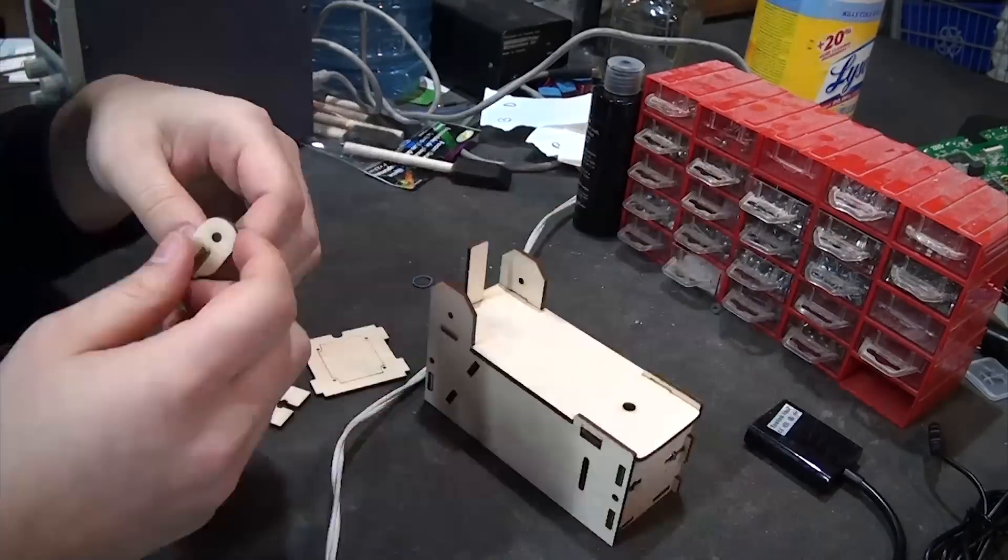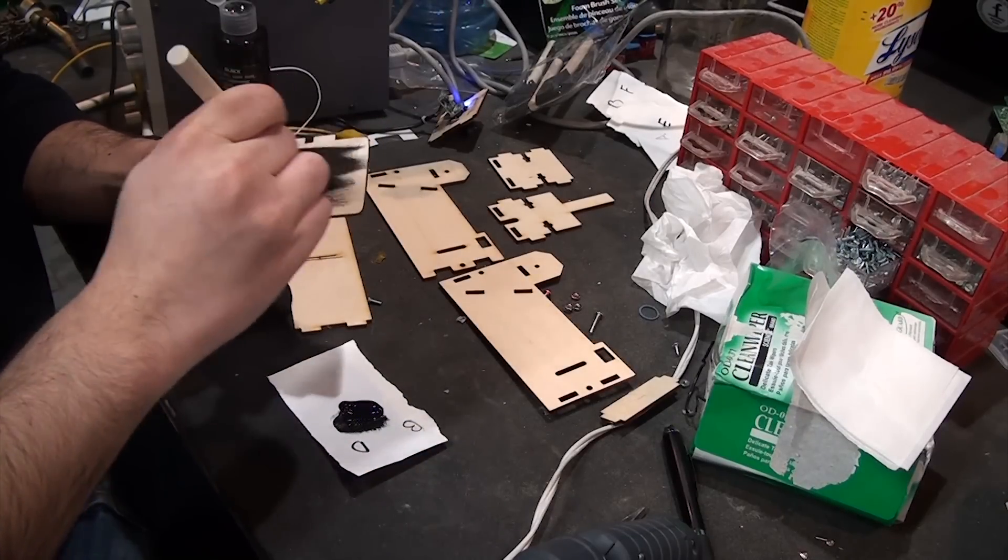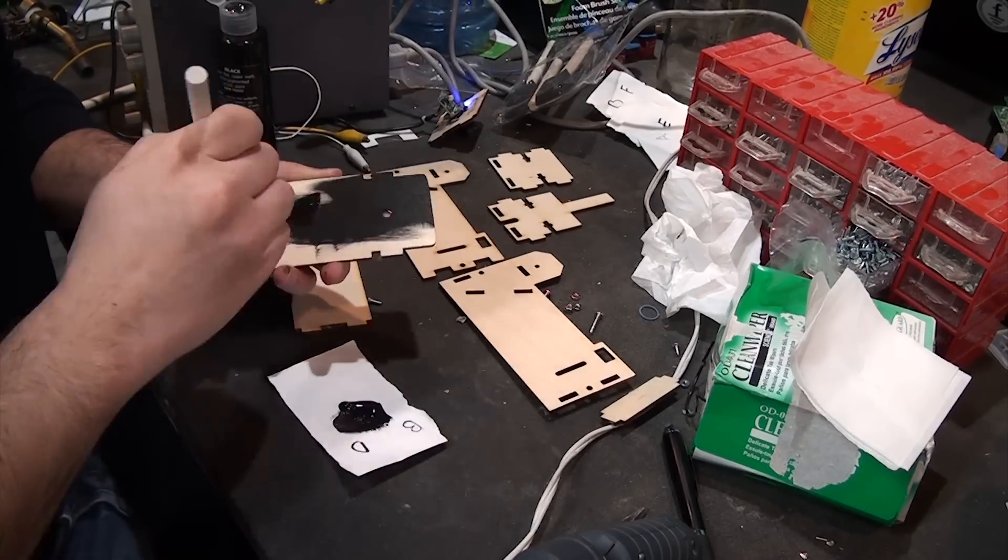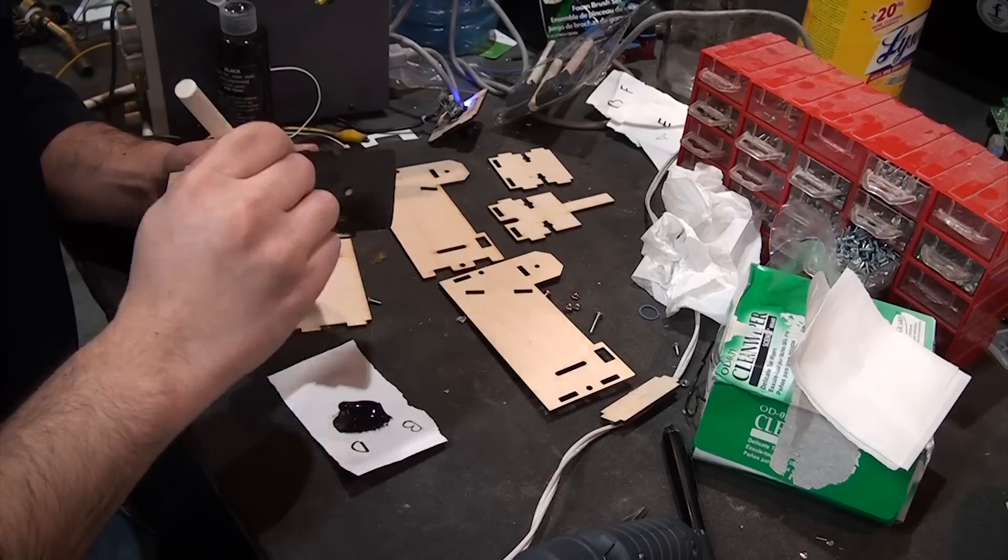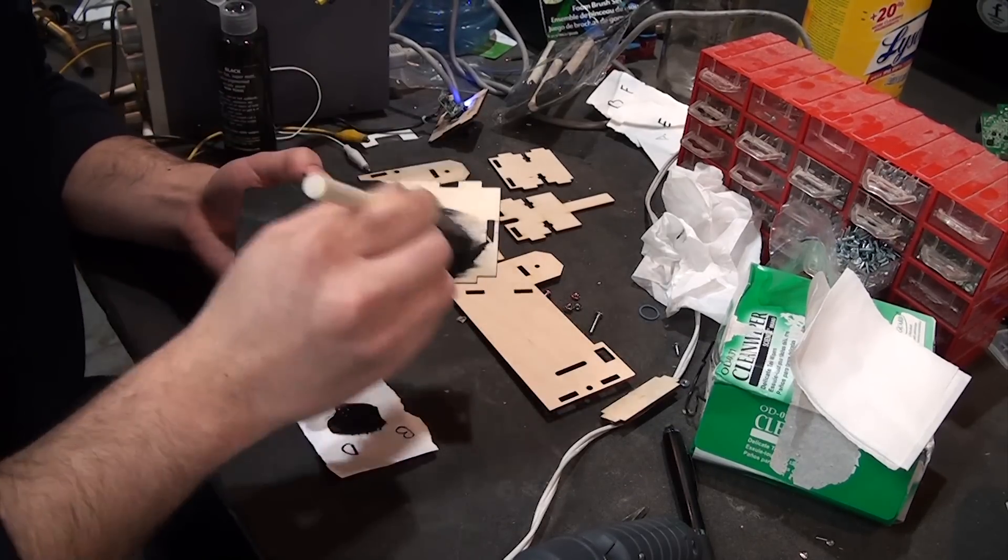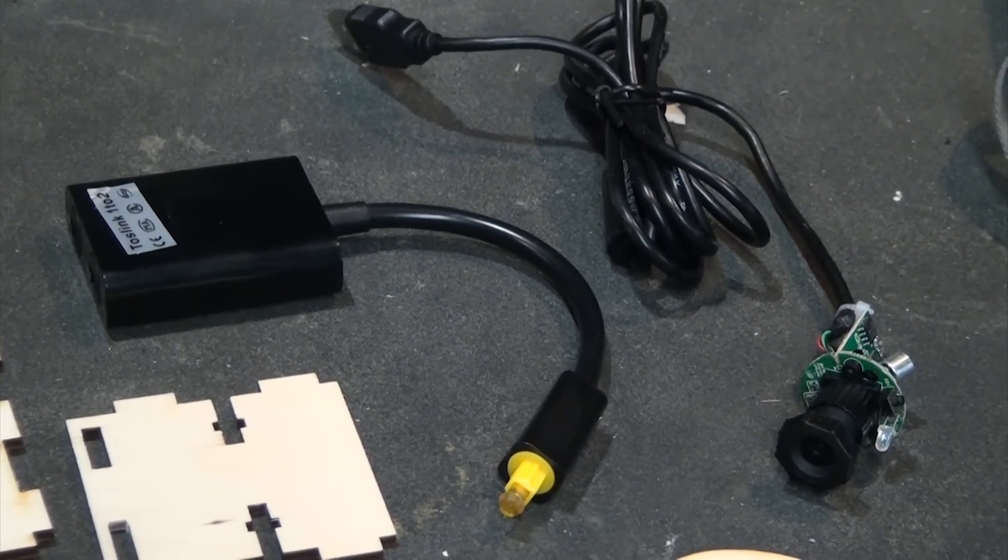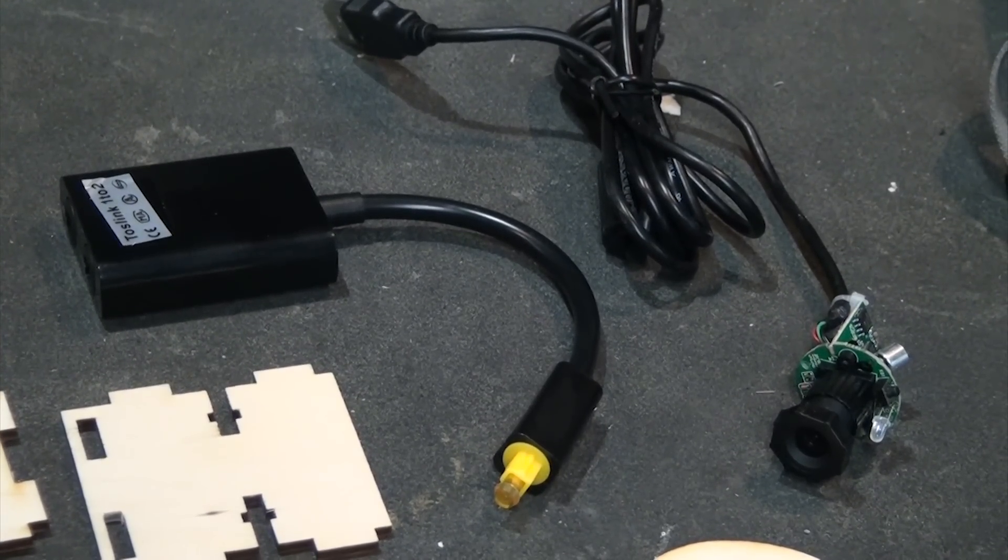After a quick test fit to see how everything goes together, I gave all the wooden pieces a quick paint job. I'm using Black 2.0, the world's darkest commercially available matte black paint, but regular black acrylics should work just fine. We're just trying to cut down on reflections inside the device, so the rainbow we make is as clear as possible. Off camera, I had already taken my webcam apart, but I'll link to the one I used in the description.